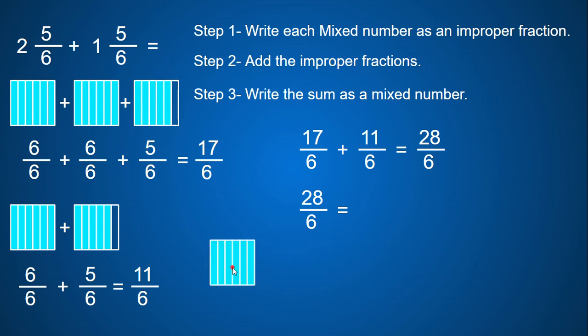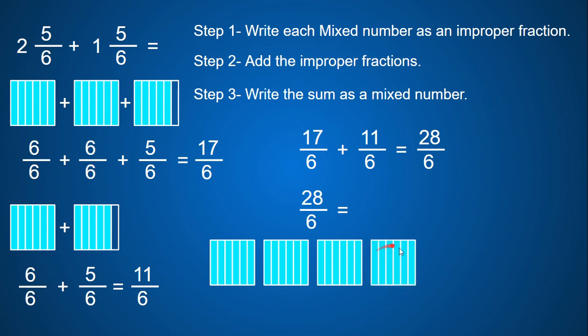So here's one whole, which gives me six sixths. Here's another whole, which gives me twelve sixths. Another whole, which gives me eighteen sixths. And another whole, which gives me twenty-four sixths. Now if I do another whole, that puts me at thirty, which is higher than twenty-eight. So I can't do that. Right now I'm at twenty-four, so I need to go four more sixths before I get to twenty-eight.